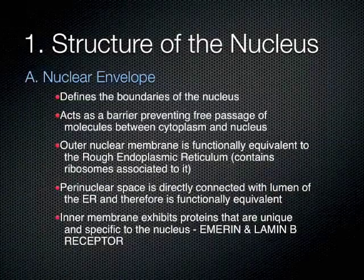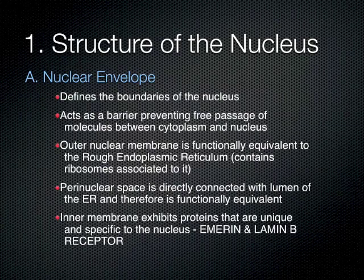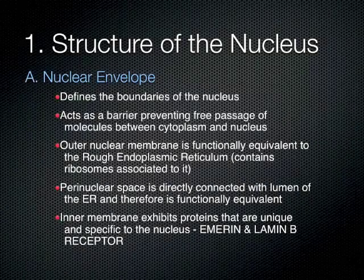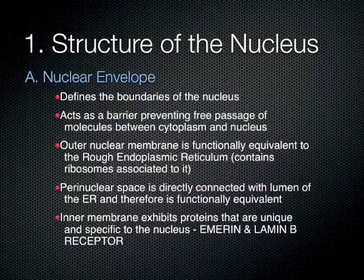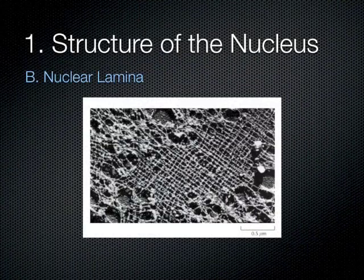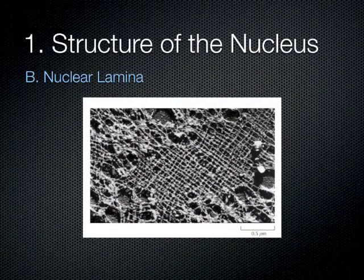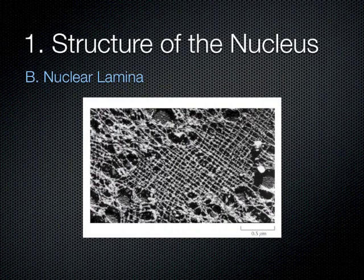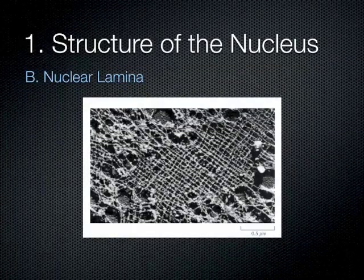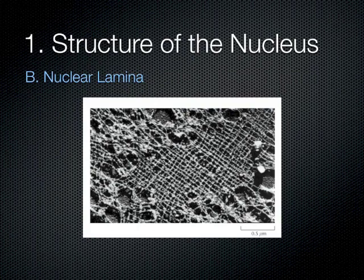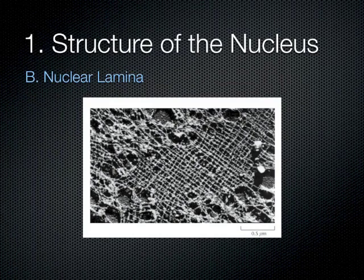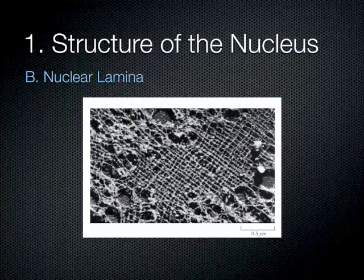Finally, it's important to re-emphasize that the inner nuclear membrane exhibits proteins unique and specific to it — two examples are emerine and lamin B receptor. Moving along, the nuclear lamina is a support structure for the nuclear envelope. It is actually a mesh of filaments — proteins forming a mesh that provides physical support to the nuclear envelope.